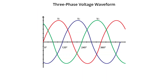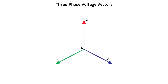Three-phase power consists of three AC voltages of identical frequency and similar amplitude. Each alternating current phase is separated by 120 degrees from the other. This can be represented by three arrows pointing outward from a central point in the shape of a triangle.